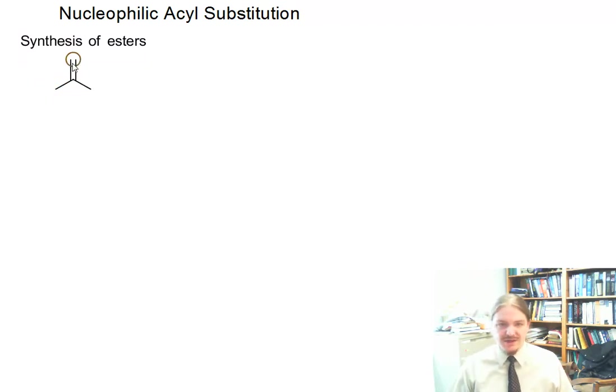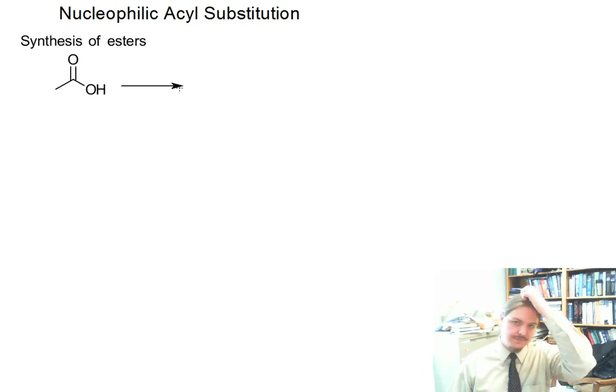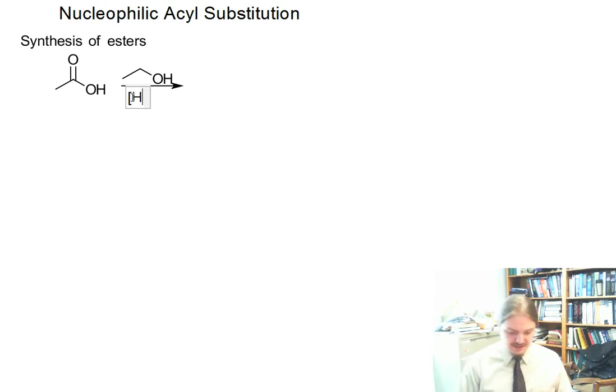One of the most straightforward ways to synthesize esters is through the reaction of a carboxylic acid and an alcohol. This reaction requires an acid catalyst, and very frequently that acid is sulfuric acid. Putting it in brackets represents that this is added as a solution, usually to the alcohol as a solvent.